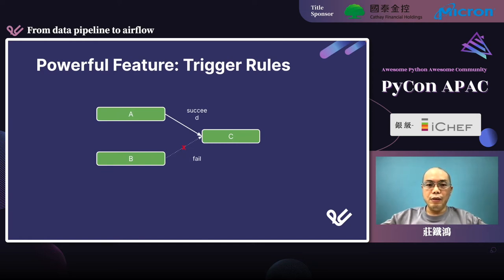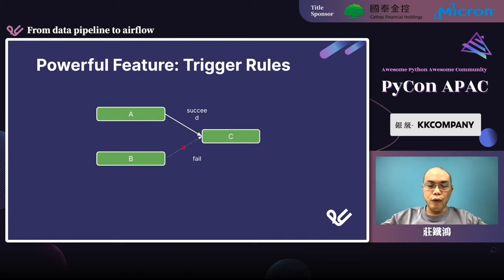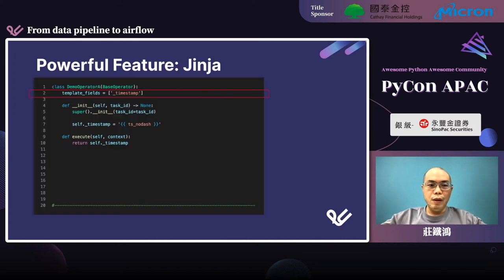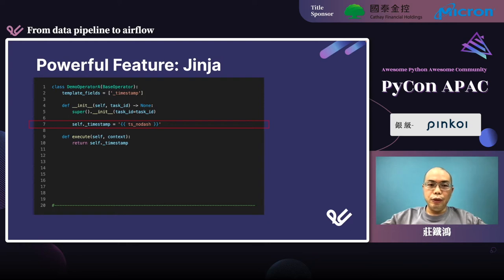Airflow has many other powerful features. One of them is customizable trigger rules. The default trigger rule of a task is all_success — the task is executed only when all its parents have succeeded. But sometimes we need different rules. For example, this DAG sets the trigger rule of task C to one_success, which means the task will begin as soon as one of its parents succeeds. Another powerful feature is the support of the Jinja template engine. We can put the names of variables in template fields, then set the variable using Jinja. ts_no_dash is a built-in variable — it is a timestamp without a dash.